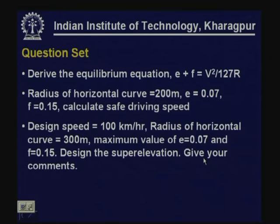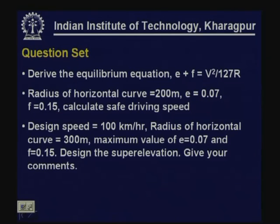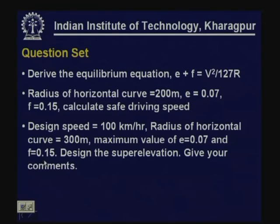Practice questions: 1) Derive the equilibrium equation e + f = V²/(127R). 2) For radius 200 m with permissible e = 7% and f = 0.15, calculate the safe driving speed. 3) For a road with design speed 100 km/h, radius 300 m, maximum e = 0.07, and f = 0.15, design the super elevation and comment on the design.